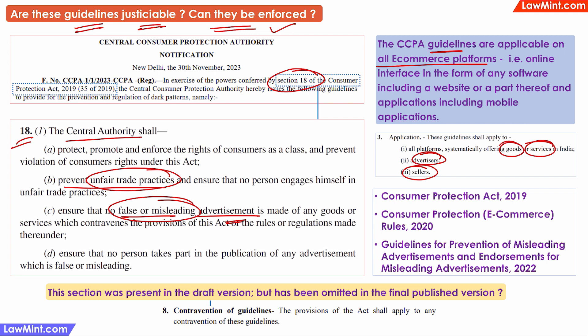These guidelines have to be read, understood, and applied in conjunction with the Consumer Protection Act, the Consumer Protection e-commerce rules, and also the guidelines for prevention of misleading advertisements and endorsements of misleading advertisements. This is because these guidelines have been created using the powers conferred by the Consumer Protection Act, and some of the terms used — such as advertiser, marketplace, e-commerce entity, platform, and seller — are defined in these other laws.